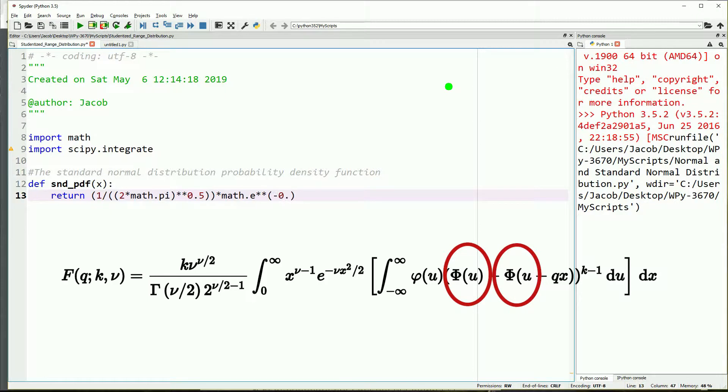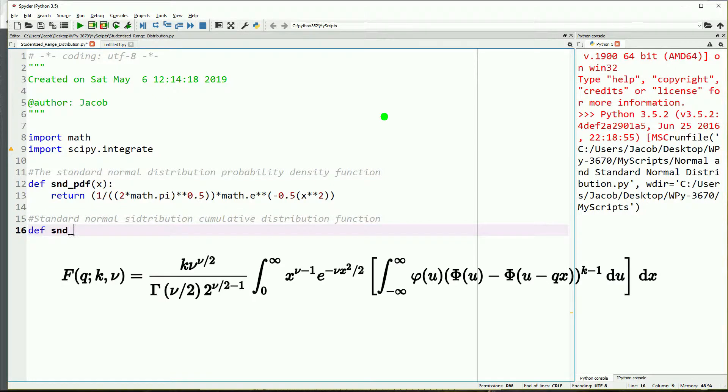If you look down at the function below, you'll see lowercase phi - that is the probability density function of the standard normal distribution - and uppercase phi is the cumulative distribution function of the standard normal distribution. The cumulative distribution function is simply the integral of the probability density function, which is the area under the curve that we usually use when trying to get a p-value for something like a z-test. These two functions are required for the studentized range distribution.